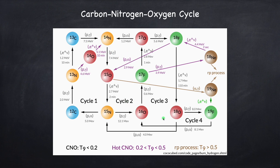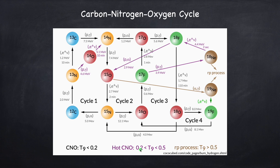We've broken up the CNO cycle into two CNO cycles: the cold cycle, represented by the black arrows, and the hot cycle, represented by the purple arrows. The cold cycle will take place at temperatures less than T9 of 0.2, where T9 means the temperature in units of 10 to the 9 Kelvin — a billion Kelvin. The hot CNO cycle takes place at temperatures between T9 of 0.2 and 0.5. It's not that if you get to a T9 of 0.2 the cold CNO cycle shuts off and the hot one turns on — both of them are going on simultaneously.